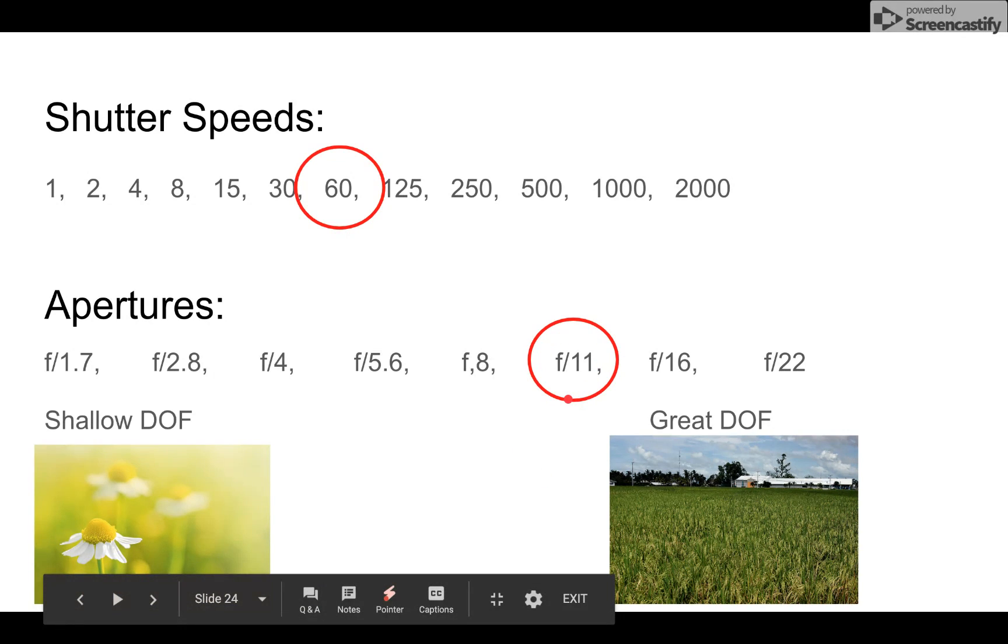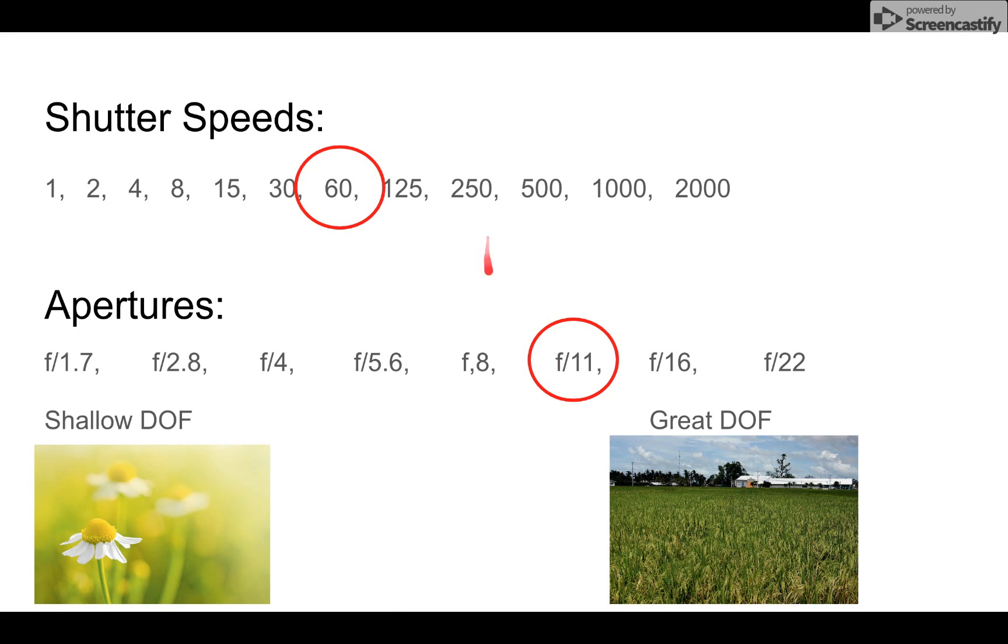Then it asks you if you are trying to create an equivalent exposure with shallow depth of field. We know we need to move to this side of the spectrum of our apertures, we'll need to move to the left.